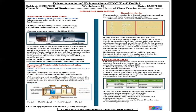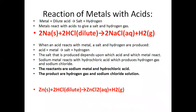आज हम लोग बात करेंगे कि कैसे एक धातू अम्ल से प्रतिक्रिया करता है। How a Metal reacts with Acid? Reaction of Metal with Acid: when metal comes in contact with the acid in aqueous or diluted form, it creates Salt and Hydrogen Gas. जब एक धातू किसी अम्ल से प्रतिक्रिया करता है तो लवण और Hydrogen Gas देता है।